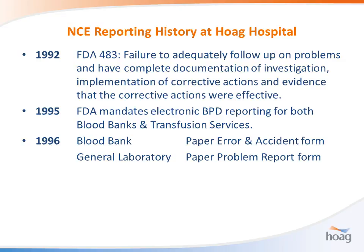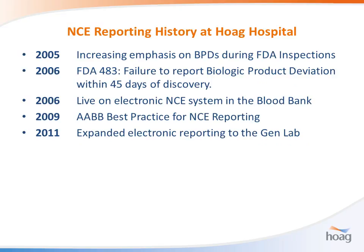The history of NCE reporting at our hospital: in 1992, we had a donor program and were heavily inspected by the FDA, and received a 483 for failure to adequately follow up on problems. In 1995, the FDA mandated electronic biologic product deviation reporting for blood banks and transfusion services. In 1996, we developed a paper program for both the general laboratory and the blood bank. By 2005, the FDA would start inspections by reviewing our last 10 reportable and non-reportable BPDs. In 2006, we received another 483 for failure to report within 45 days, which led us to implement an electronic system. AABB gave us a best practice award for that system in 2009, and in 2011 we rolled it out to the rest of the laboratory.